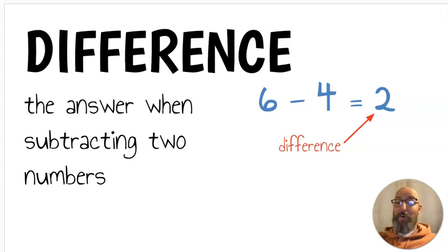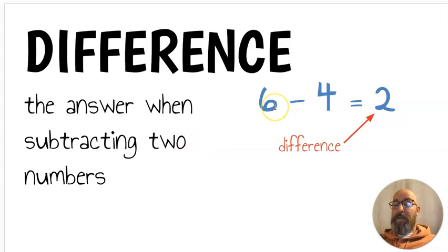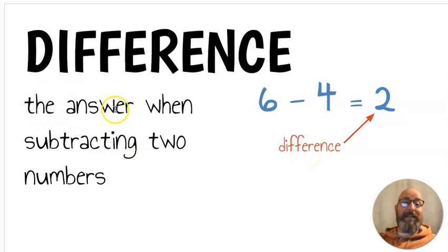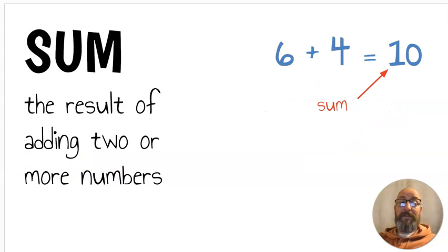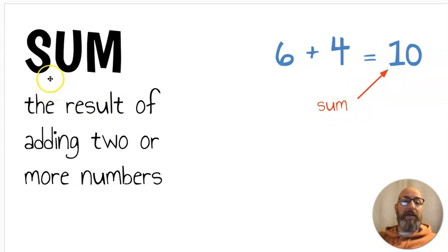Next we have the word difference. Difference is the answer when subtracting two numbers. Six minus four equals two — the answer, two, is the difference. Sum is the result of adding two or more numbers; that's the answer to an addition problem. Six plus four is ten — ten is the answer, it's the sum.